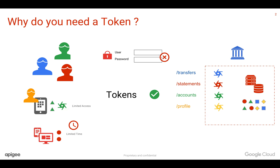A JWT — a JSON Web Token — is a special type of token which can carry information internally inside the token, and you can validate that the payload is coming from an authenticated source or not. You can sign the payload with a secret.